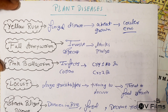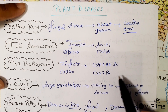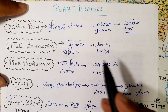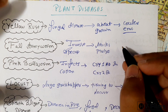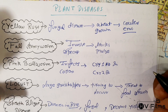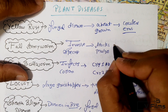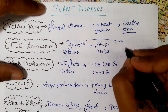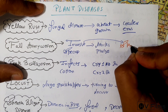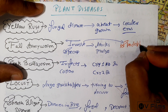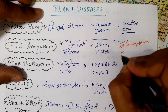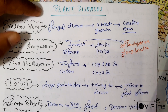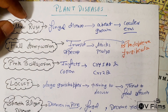The next disease is the fall army worm. It is an invasive species — Spodoptera frugiperda is the name of the species, specifically in the larval life stage of the fall army worm moth. You can remember this name as it was in the news recently.